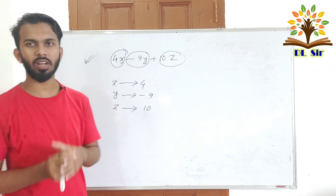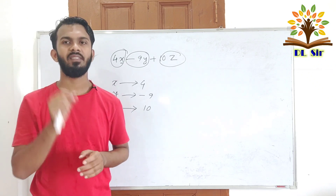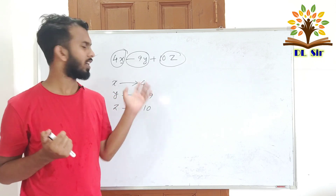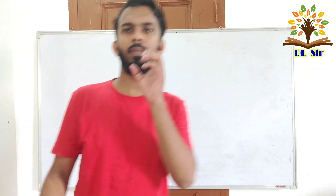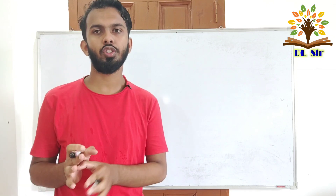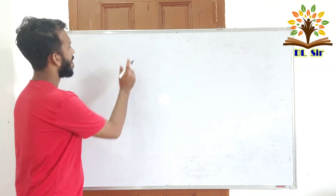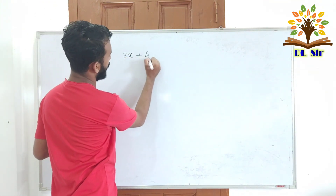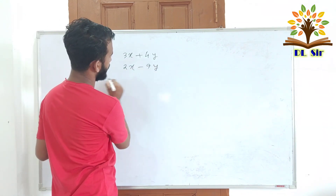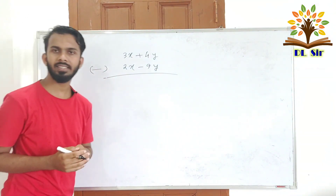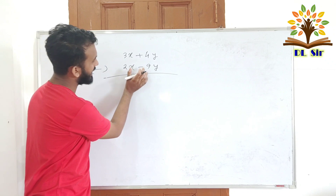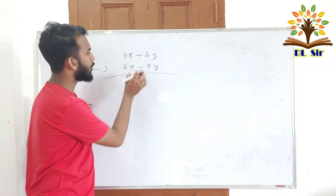If you have a coefficient of x you can identify it. If you have a linear equation, you can calculate the value of x. We can subtract equations. If you want to subtract one equation from another, the equation changes — we need to apply sign rules when we subtract.